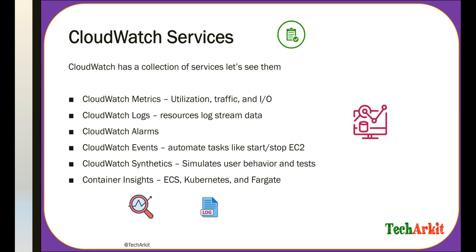CloudWatch services include: CloudWatch Metrics, used for monitoring utilization, network traffic, and disk I/O; CloudWatch Logs, for streaming resource log data; and CloudWatch Alarms, which watches for defined rules — such as CPU, memory, or disk utilization thresholds — and triggers an alarm to a specified email address when a condition is met.